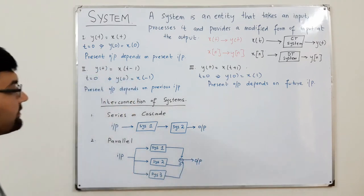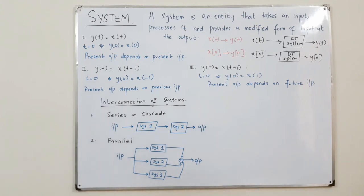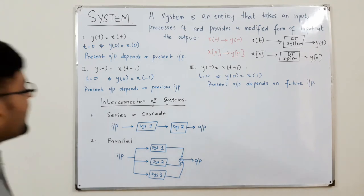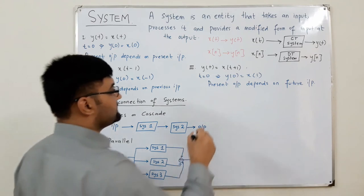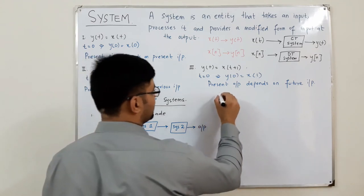In a parallel system, the input is provided simultaneously to multiple systems — System 1, System 2, up to n systems — and finally all their outputs are added together. That final sum is the final output, and such a configuration is known as a parallel system.